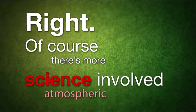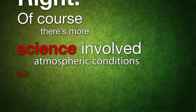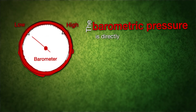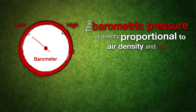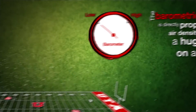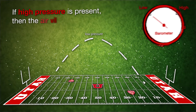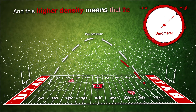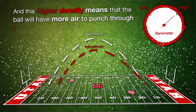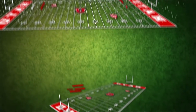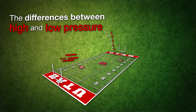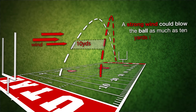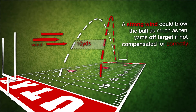Of course, there's more science involved: atmospheric conditions, barometric pressure, and wind speed. The barometric pressure is directly proportional to air density, and this has a huge effect on a football. If high pressure is present, then the air will have a higher density, and this higher density means that the ball will have more air to punch through, and will thus travel a shorter distance. The differences between high and low pressure are also the cause of winds. A strong wind could blow the ball as much as 10 yards off target if not compensated for correctly.